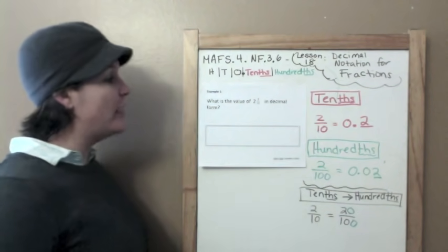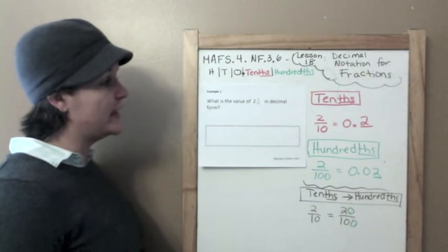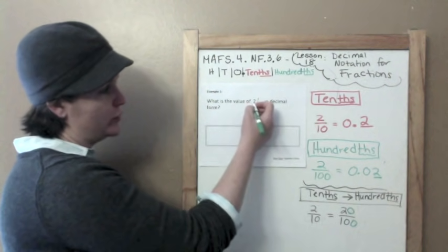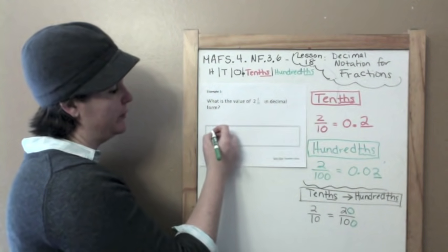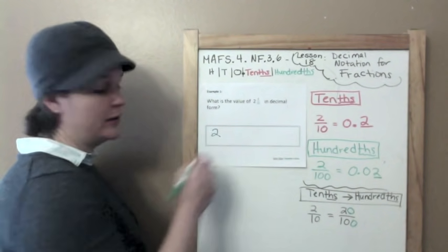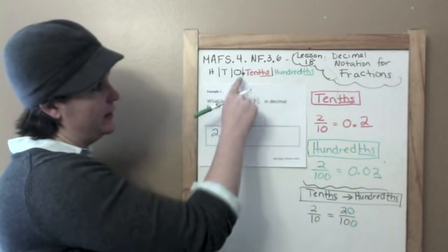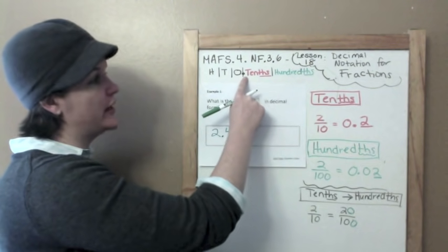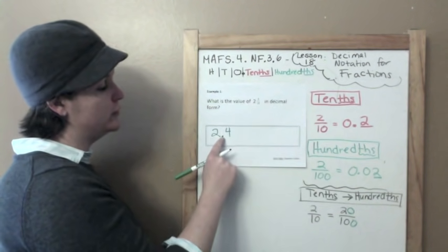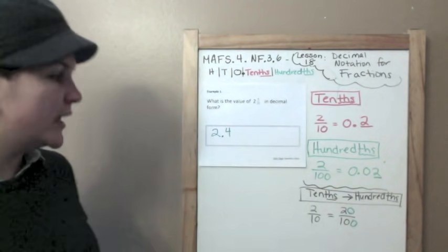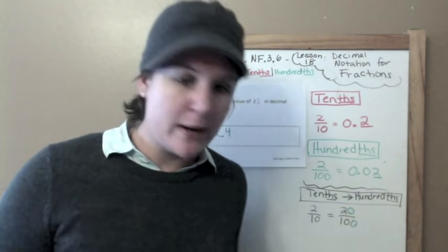What is the value of two and four tenths in decimal form? So two is my whole number, that would be my ones place, and four tenths, because the tenths place comes right after the decimal. Decimal to the right, tenths, hundredths, thousandths. That's all you need for example one, baby.